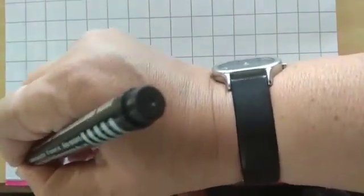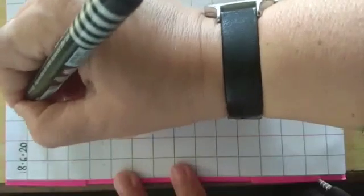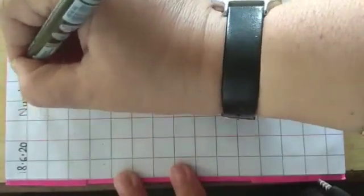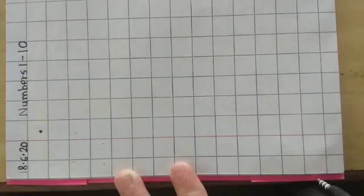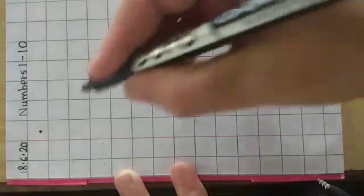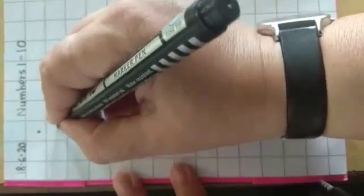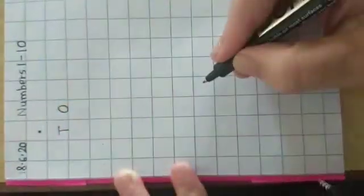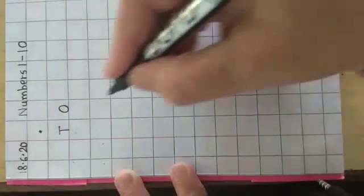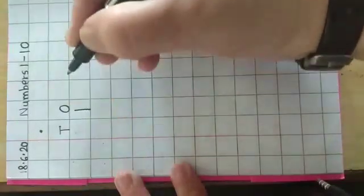Now let's revise how to write down the numbers. For writing the numbers, you need a square line notebook. First, write down the date in the margin. Then give heading: numbers 1 to 10. Then give a dot — dot means you are not going to write down in that line. Then on the next box, write down T, O. Now let's start writing the numbers. Number 1: 1 standing line.